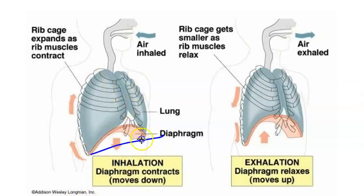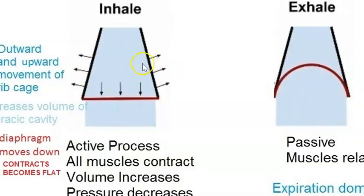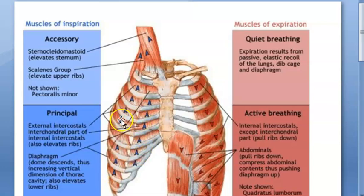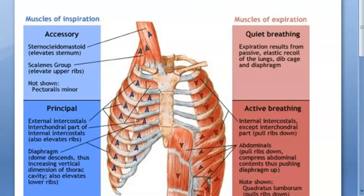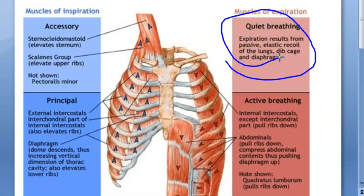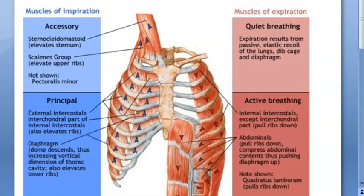The diaphragm contracts and becomes flat to bring air in, increasing the volume of the thoracic cavity — outward and upward movement of the ribcage, and downward movement of the diaphragm. For expiration, nothing extra to remember: these muscles simply return to their normal position. Expiration happens passively, so you use energy only to breathe in.